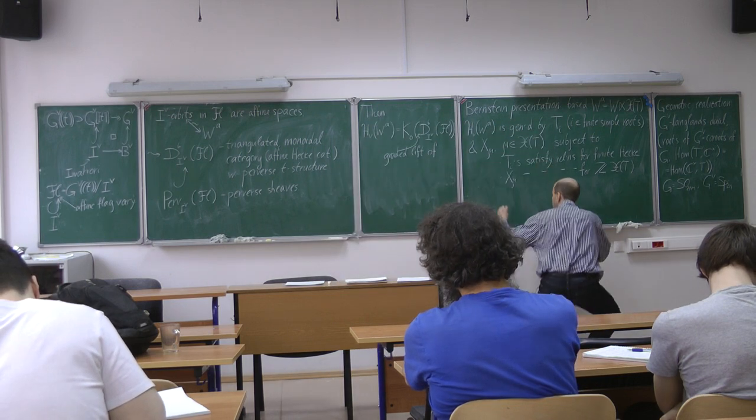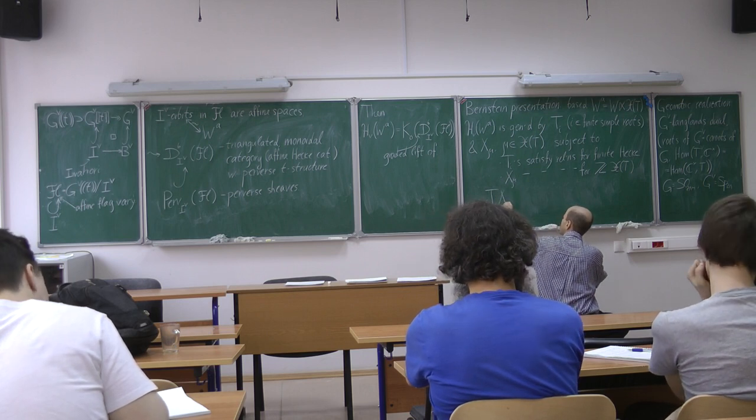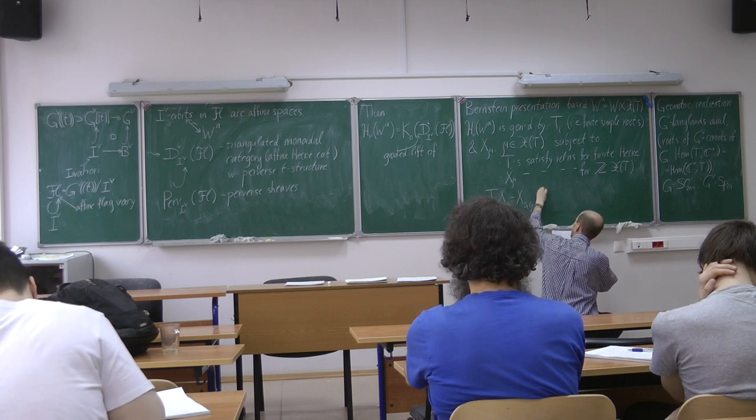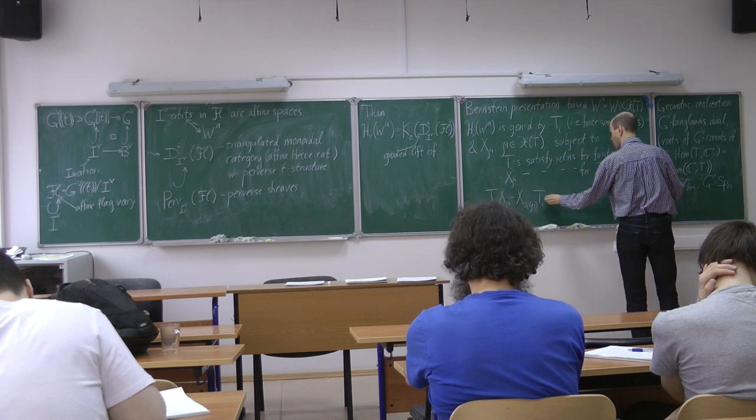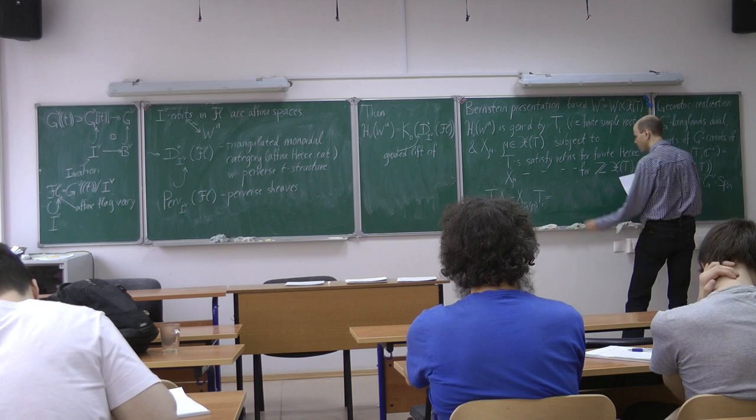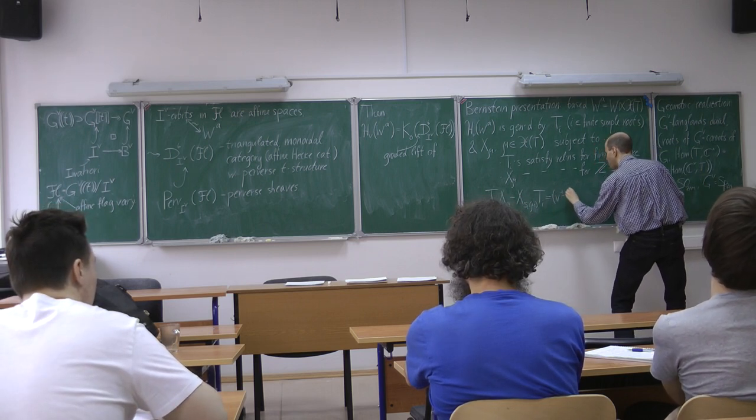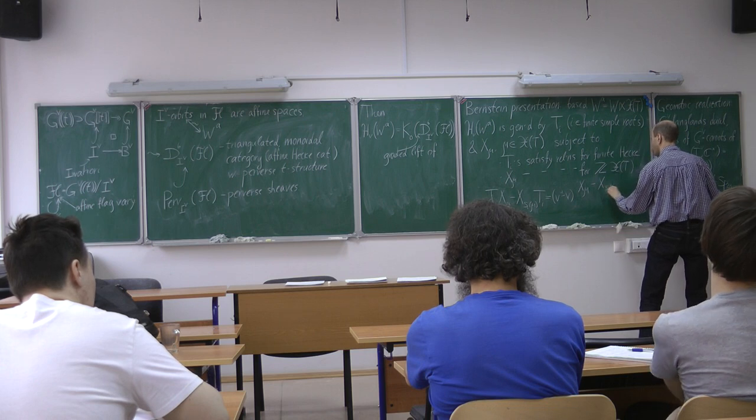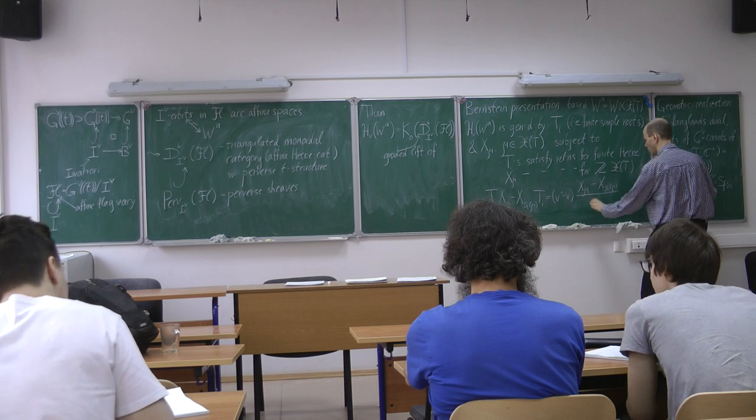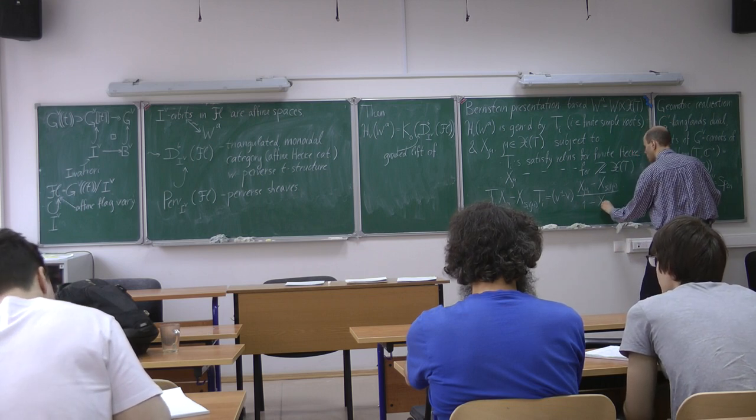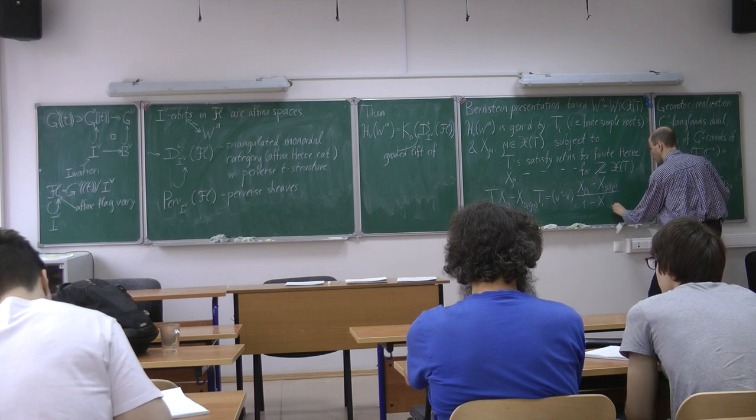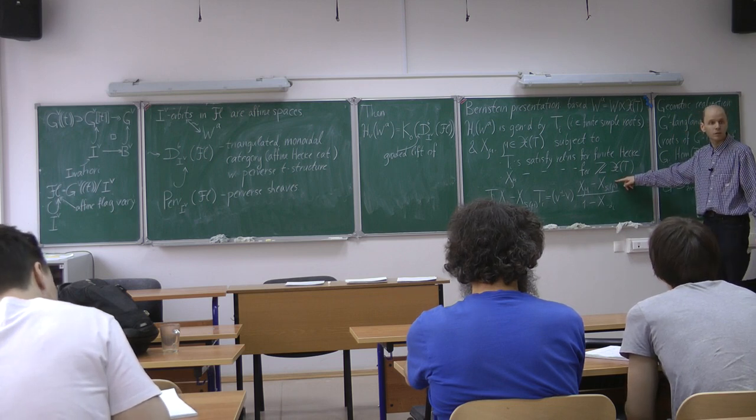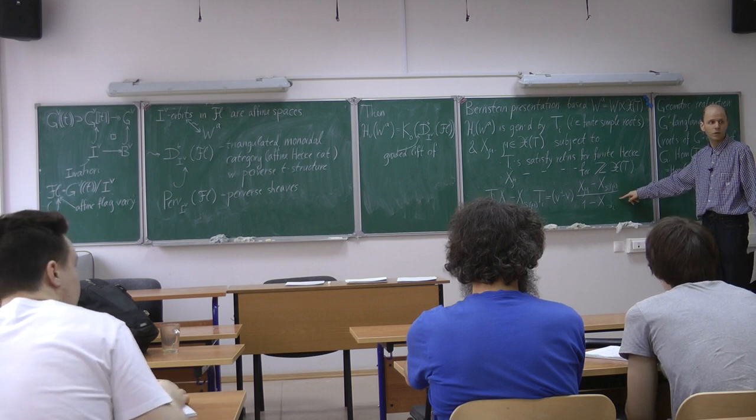It looks like this: T i times x mu minus x S i mu T i is equal to, if I get things correctly, v minus one minus v times the following fraction: x mu minus x S i mu divided by one minus x to minus x of minus alpha i minus the simple root. And note that this Laurent polynomial in the numerator is divisible by the Laurent polynomial in the denominator.